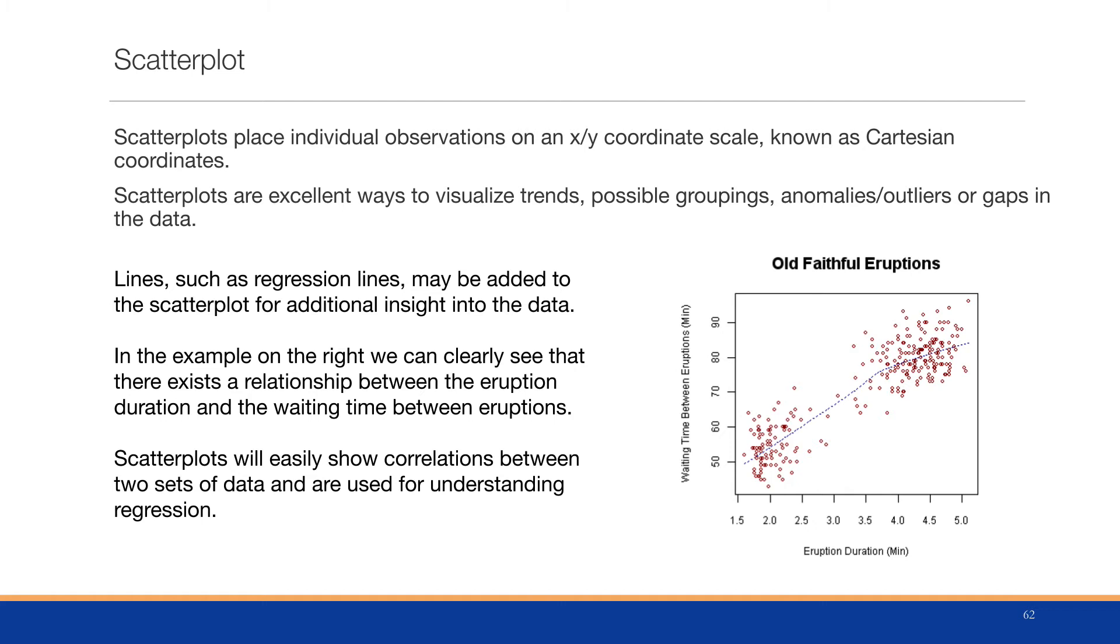Lines, such as regression lines, can be added to the scatter plot for additional insight if needed. In the example on the right, we can clearly see that there exists a relationship between eruption duration and waiting time between eruptions. What's also interesting here is that we see two groups, one group at the bottom left and one group at the top right, and so there's a gap in between, and that gap might be interesting.